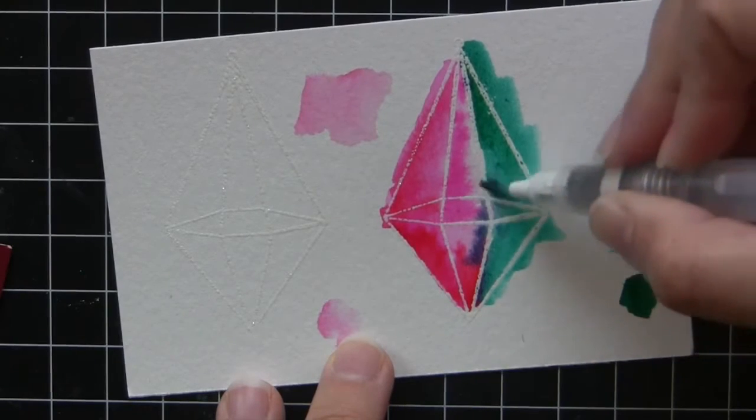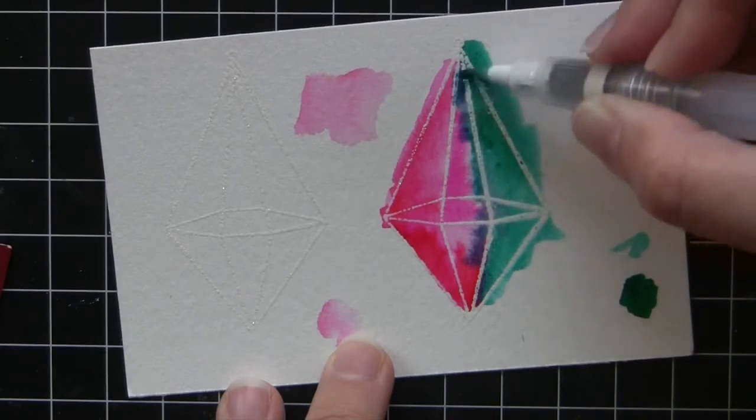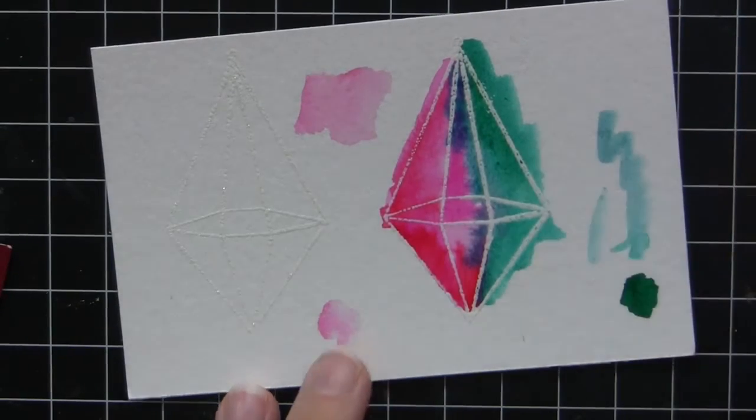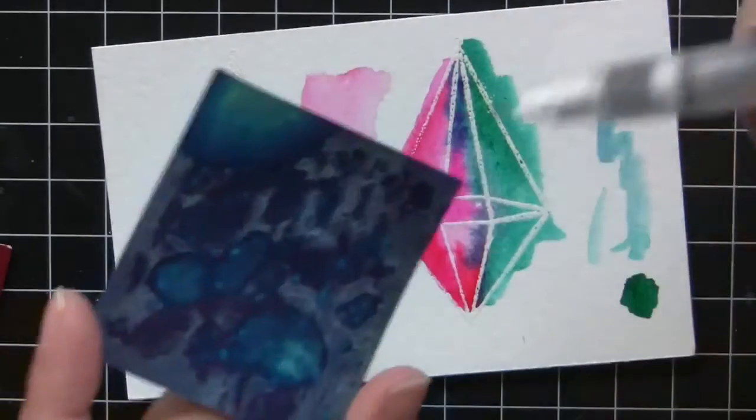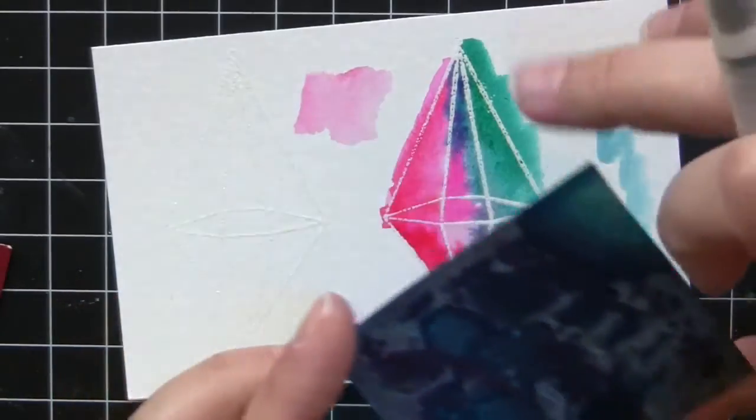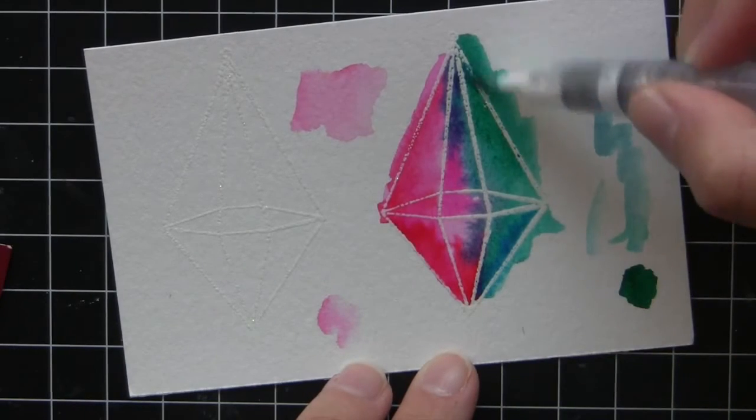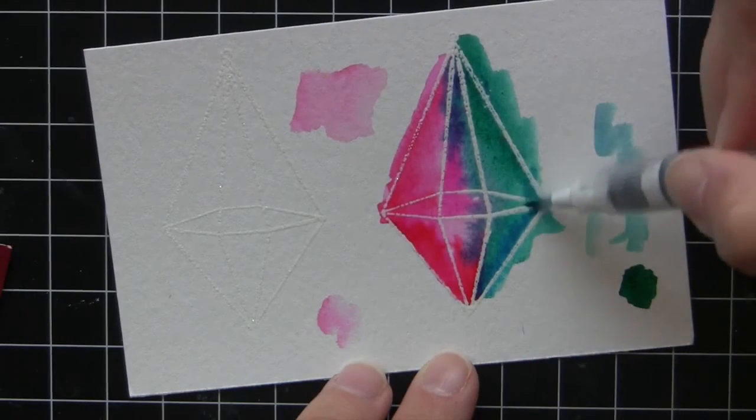The thing about embossing is it makes it really easy to keep that color just right there. Now I'm going to dot some of the color into the middle and you can see the two colors starting to interact with each other and looking really cool. As this dries they'll blend more together. You can see it kind of fading together more there. It looks really neat.